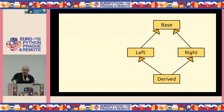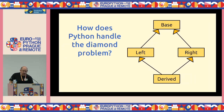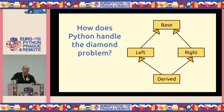How does Python handle the diamond problem? As I mentioned, multiple inheritance is only truly supported in a few mainstream languages — Python and C++, plus Perl. Languages like Scala have traits, Ruby has modules, and more modern languages like Go and Rust largely avoid inheritance altogether. Python solves the diamond problem using something called the method resolution order, or MRO.